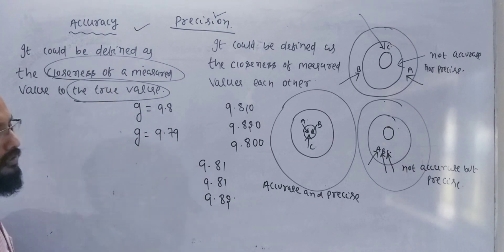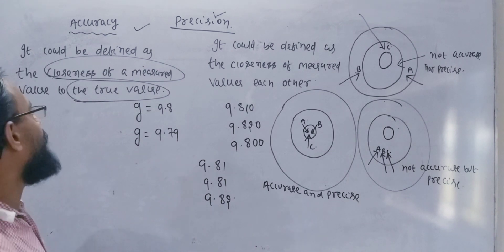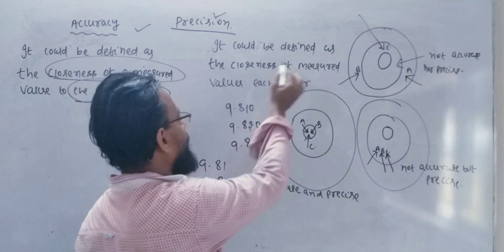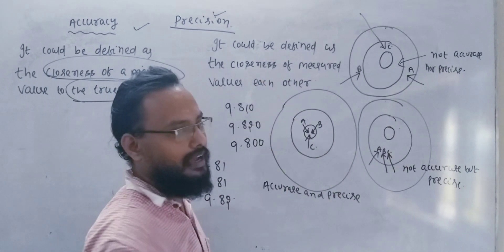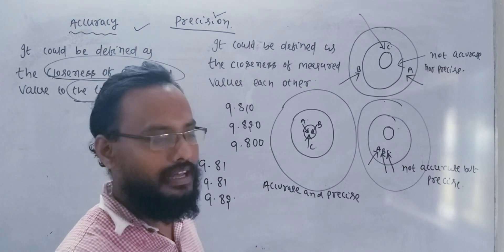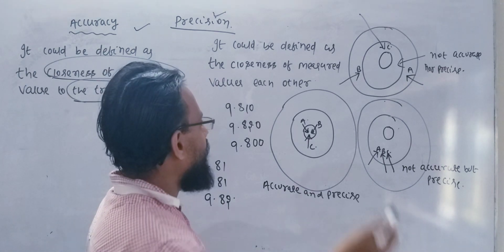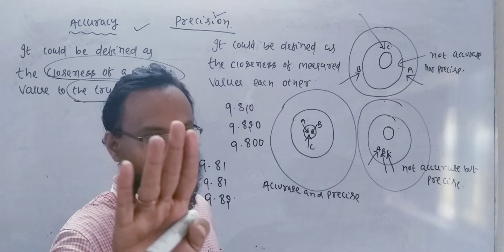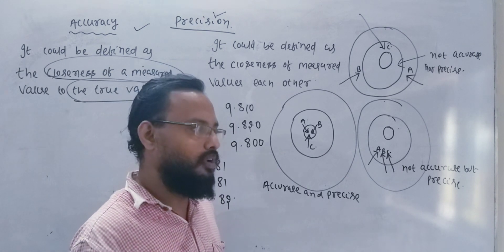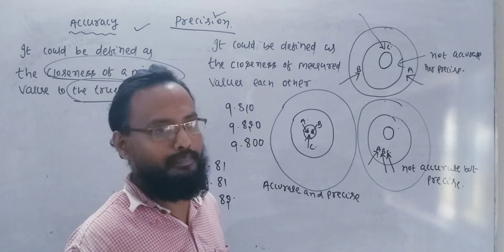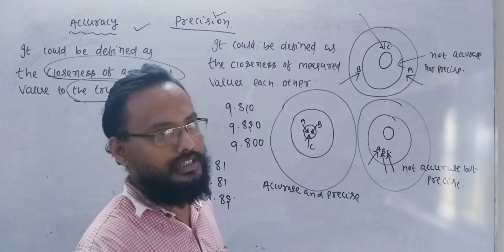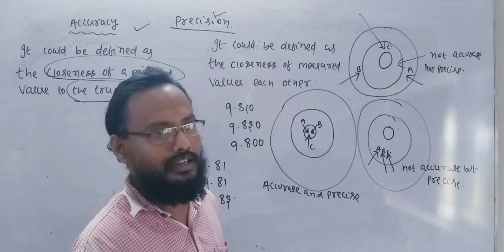Precision can be defined as the closeness of measured values to each other — that is, the agreement among repeated measurements. So accuracy is the closeness to the true value, while precision is the closeness of values to one another. Precision may or may not be accurate, and accuracy may or may not be precise.